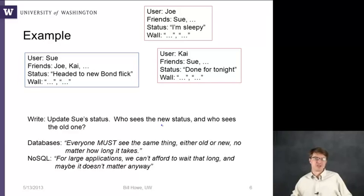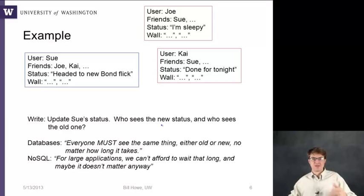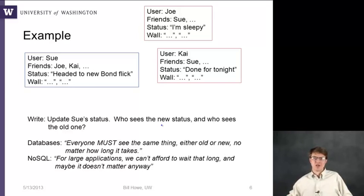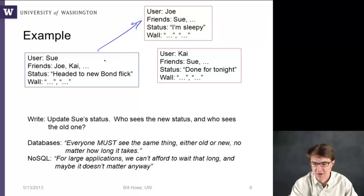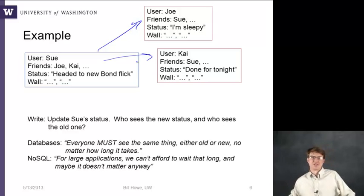NoSQL systems made the observation that for really large applications we simply can't afford to wait arbitrarily long for this to happen. You need status updates to commit and respond so the user can go on and do other things — they can't look at an hourglass while synchronization is still occurring. And further, maybe it doesn't matter anyway: if Sue's friend Joe sees the new status while Kai still sees the old status, maybe who cares, as long as Kai eventually sees the new status.